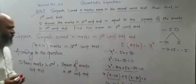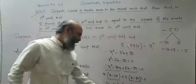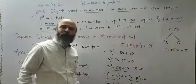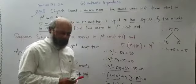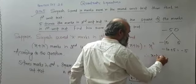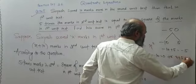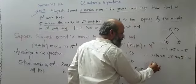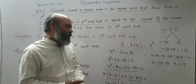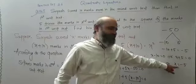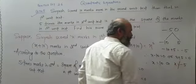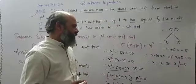Now we have two brackets whose product is equal to 0, so either this expression equals 0 or this expression equals 0. Therefore either x minus 10 equals 0, or x plus 5 equals 0. Therefore x equals 10 or x equals minus 5. We are not going to consider x equals minus 5 because marks cannot be negative.